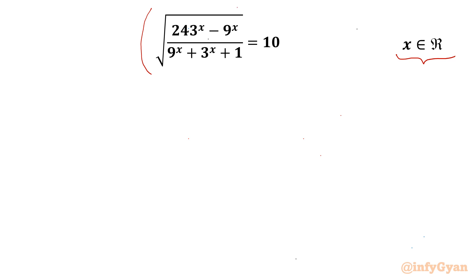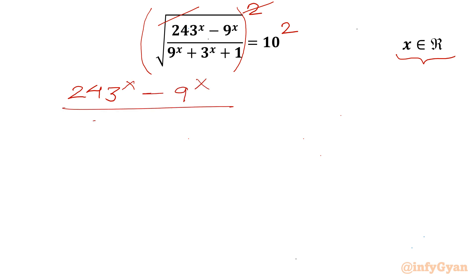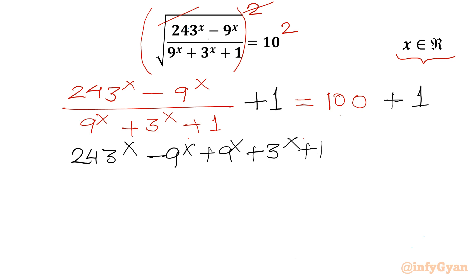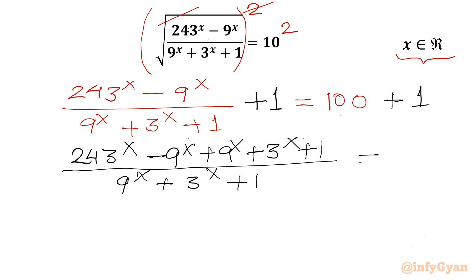Let's get started by squaring both sides. Now I can cancel the square root with the square. So our equation becomes: (243^x minus 9^x) divided by (9^x plus 3^x plus 1) equals 10 squared, which is 100. Now I will add 1 to both sides. Taking the LCM of the LHS, the numerator becomes 243^x minus 9^x plus 9^x plus 3^x plus 1, and the denominator is 9^x plus 3^x plus 1. The RHS is 101.